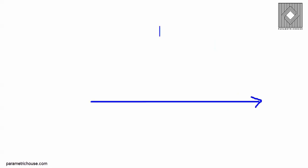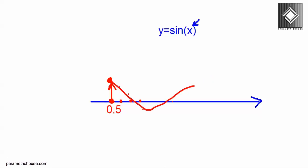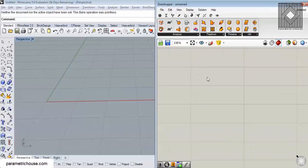If you look at this axis and this equation, we have y equals sine of x. What happens is that we feed the x number and the sine of it is added to the y. So if we have a point at maybe 0.5, the sine of 0.5 is calculated and it goes to the y coordinate. So if we have a series of points and pass them through the sine function, we can produce the sine curve and connect those points.